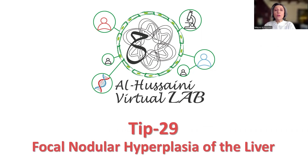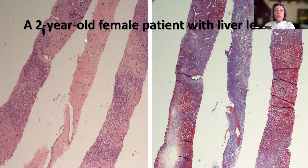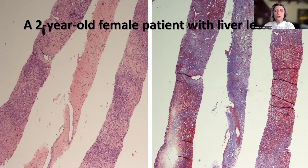This is interesting because it occurred in a two-year-old child, and this is quite unusual. However, the pathological features are quite typical. This is a core biopsy from the liver — a liver biopsy from a two-year-old female patient who was discovered to have a liver lesion. The radiologists were not quite sure about the diagnosis, especially taking into consideration the age.